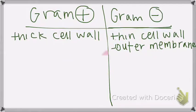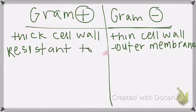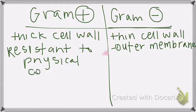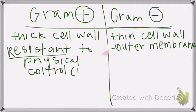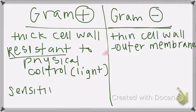Okay, but remember, that gram positive with their thick cell wall are going to be resistant to physical control. So they are resistant to physical control. Specifically, the physical control that we're going to do a lab with is UV light. So we're going to do a lab with that. They are sensitive. They don't have that outer membrane. So they are sensitive to chemicals.